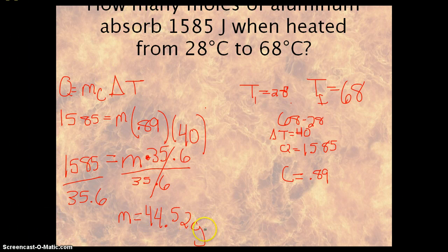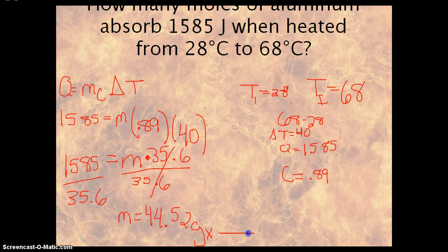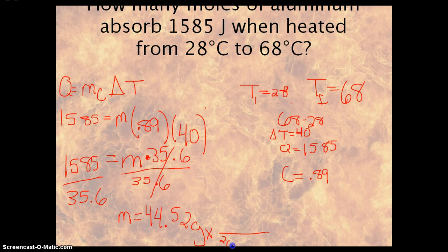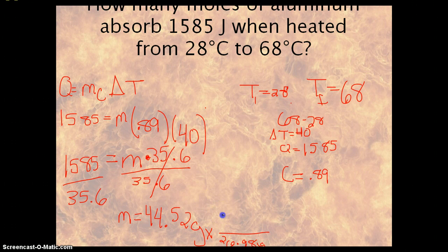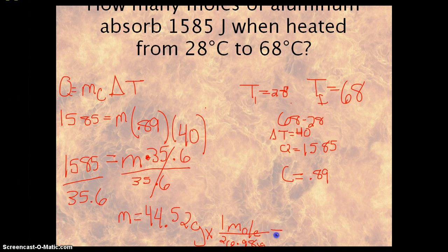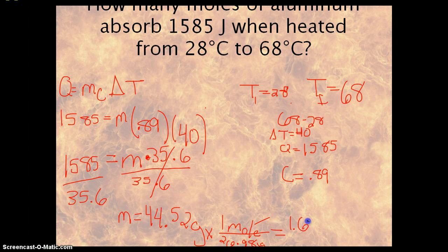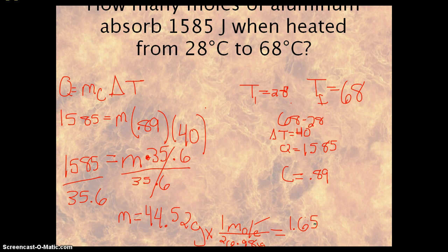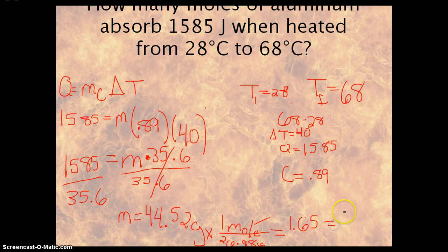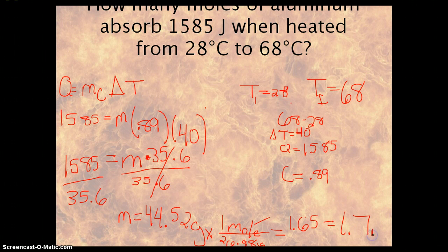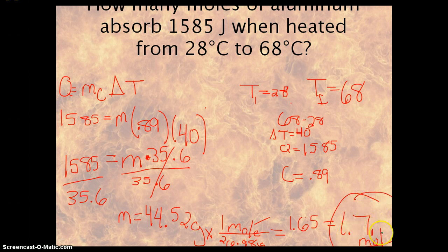We need to convert grams of aluminum to moles. We use the molar mass of aluminum, which is 26.98 grams per mole. So 44.52 divided by 26.98 gives you 1.65. Now sig fig - the least we have is 2 sig figs, so we get 1.7 moles as our answer.